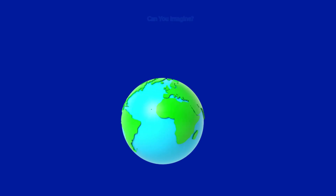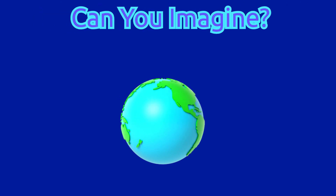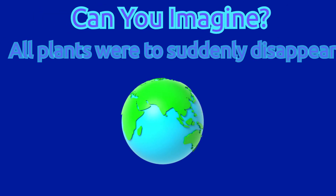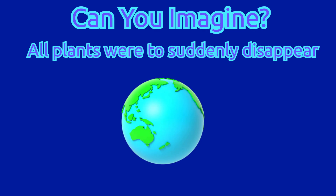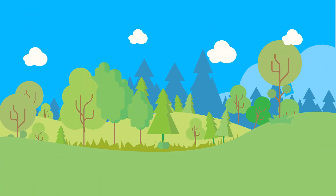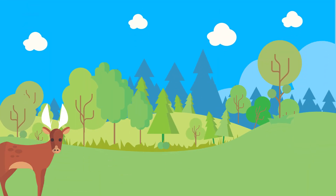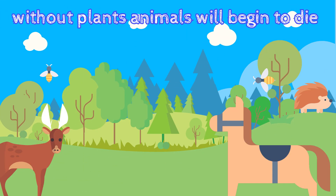Can you imagine what would happen if all plants were to suddenly disappear from the earth? Without plants, many animals and insects would slowly begin to die since they would be left without a source of food.